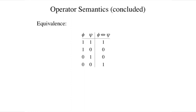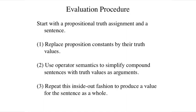Finally, we get to equivalence, and this is an easy case. An equivalence is defined to be true if and only if the truth values of its constituents agree — in other words, they are either both true or both false. Given a propositional truth assignment and these definitions for our operators, we can compute the truth value of any sentence in the language.